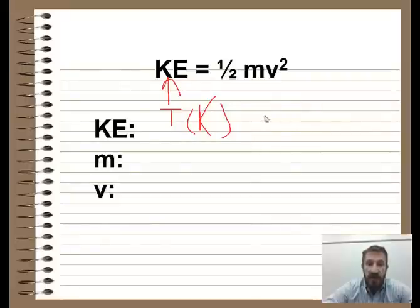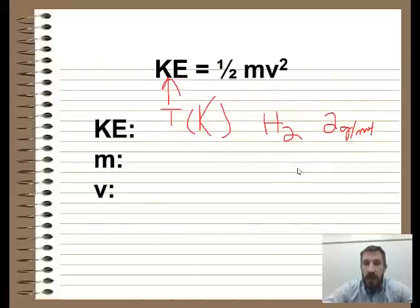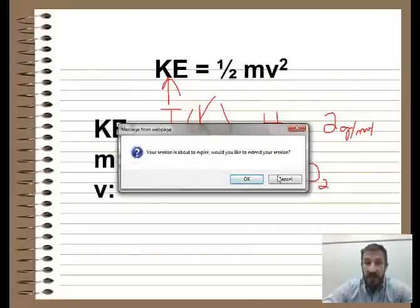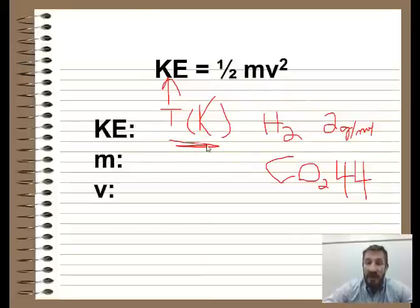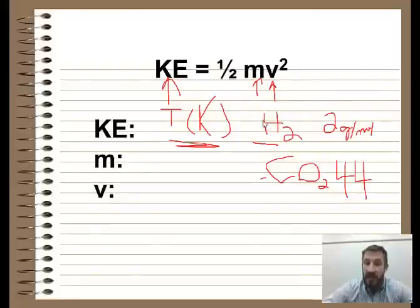If we have two different particles — something light such as hydrogen H2, which has a molar mass of about 2 grams per mole, and something like CO2 (carbon dioxide), which is much heavier. Oxygen has a mass of 16, so 16 times 2 is 32, plus carbon at 12, giving CO2 a mass of 44 grams per mole. If both gases are at the same temperature, they have the same kinetic energy, but the heavier gas moves slower and the lighter gas moves faster. Heavier particles move slower and lighter particles move faster at the same temperature.